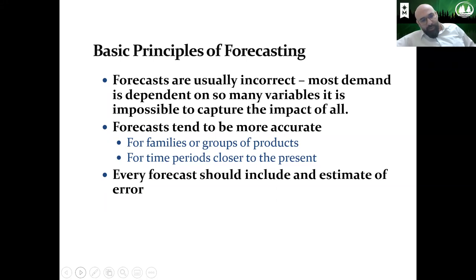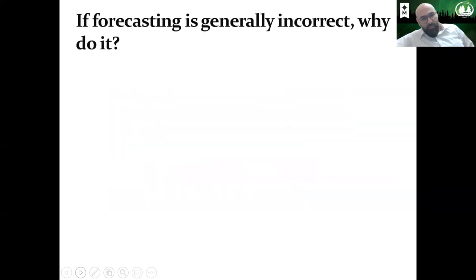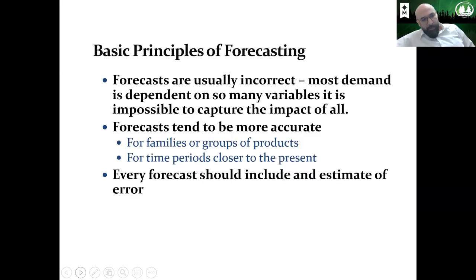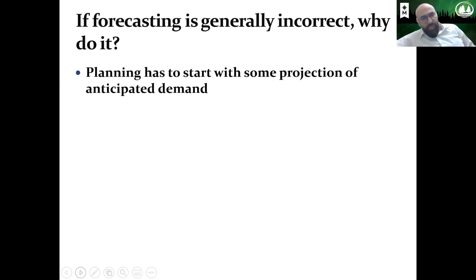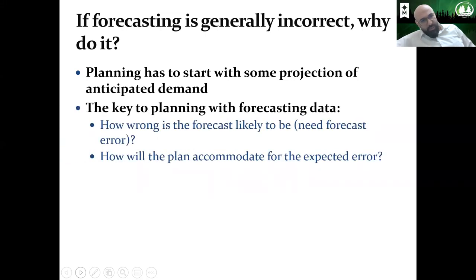Every forecast should include an estimate of error. Whenever we do forecasting, we have to calculate how far we are from the accurate number. So the question is: if forecasting is, in general, incorrect, why do we do it? Well, we need it to plan — we need a starting point to create some plans and anticipate some demands. The key to planning with forecasting is to ask: how wrong is the forecast likely to be? This is what is called the forecasting error. And how will the plan accommodate for expected error?